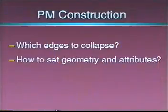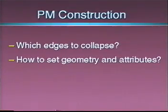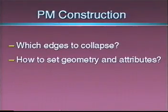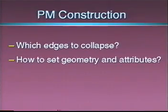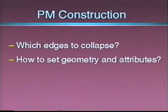So far, we have not addressed the issue of constructing these progressive mesh representations. The key questions are what edges to collapse and what geometry and attributes to assign to the affected neighborhoods. Ideally, the mesh should be simplified in such a way that it preserves as much as possible its original appearance. Our solution involves an optimization process; for details, we refer you to the paper.